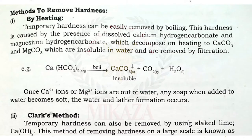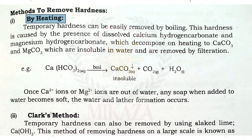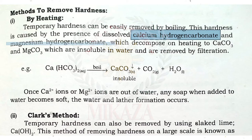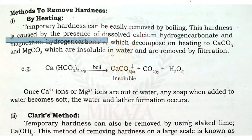How can hardness be removed so that water becomes soft? The most easy method is by heating. Temporary hardness can be easily removed by boiling. This hardness is caused by calcium hydrogen carbonate and magnesium hydrogen carbonate, which decompose on heating to form calcium carbonate and magnesium carbonate, which are insoluble in water.